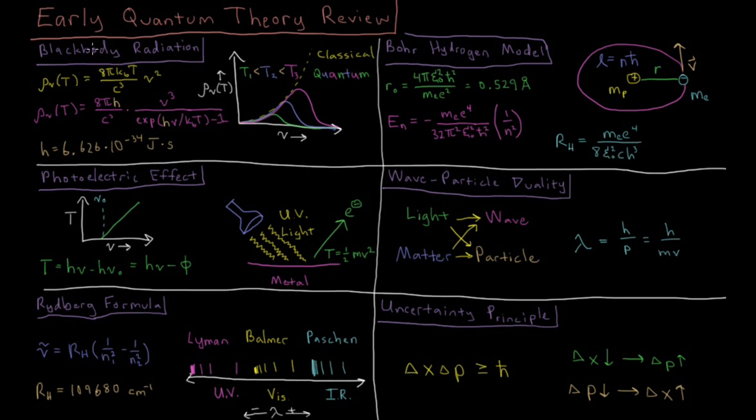The first was black body radiation, where the classical Raleigh-Jeans law predicted that the intensity of radiation emitted by a black body would increase quadratically with the frequency, which led to what was called the ultraviolet catastrophe because it predicts that you have infinite radiation at infinite energies of photons, and that's a very poor prediction.